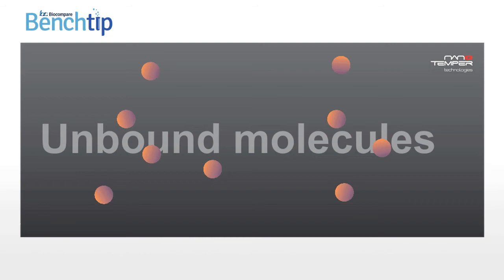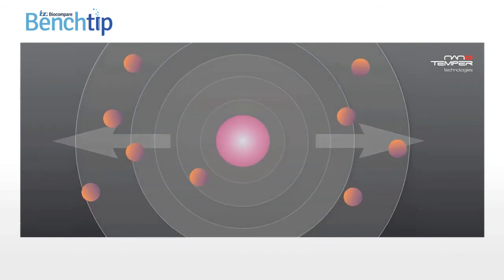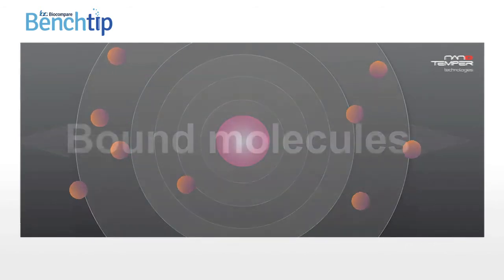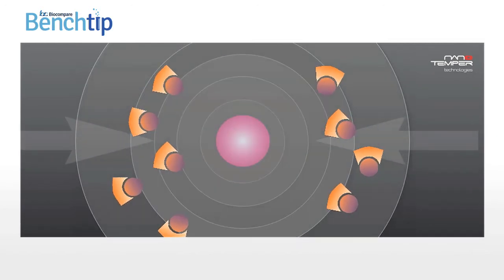Molecules or particles are initially distributed evenly and diffused freely in solution. When the IR laser is switched on, unbound molecules typically move out of the heated spot. Binding of one molecule to another thus results in altered movement across the temperature gradient.